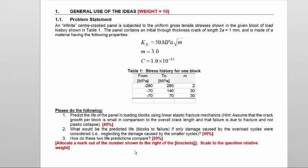Hint: assume that the crack growth per block is small in comparison to the overall crack length, and that failure is due to fracture and not plastic collapse. Now, the first statement there means I only need to calculate the growth in the crack delta A when I play these signals through.